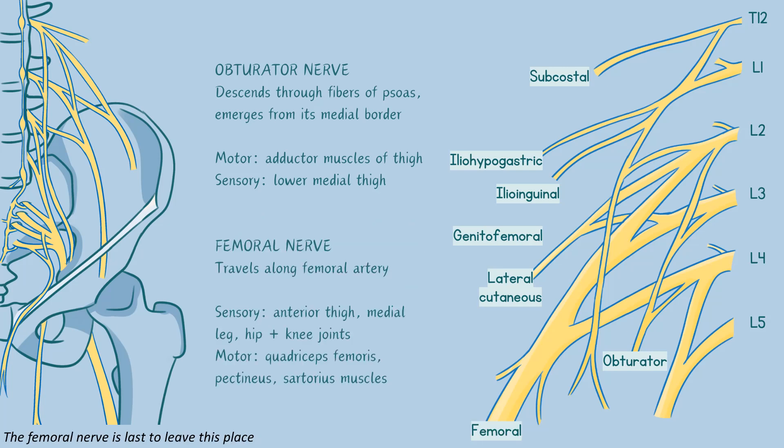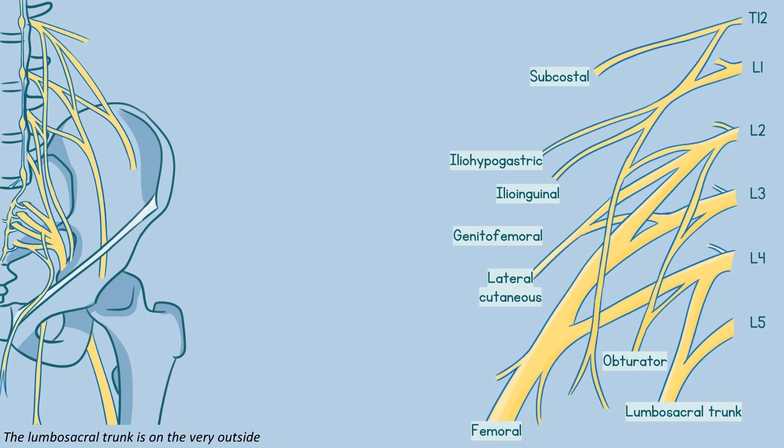The femoral nerve is last to leave this place — the obturator's roots L2-3-4; femoral has the same. It travels with the femoral artery but outside the sheath, to the anterior thigh and muscles underneath.